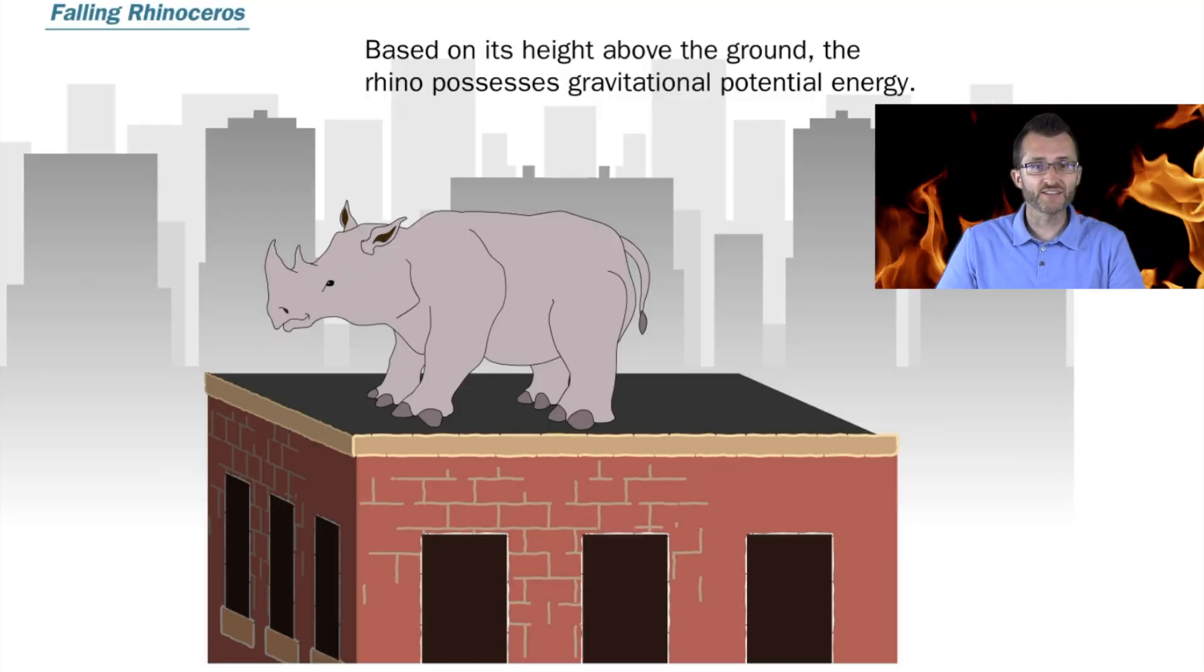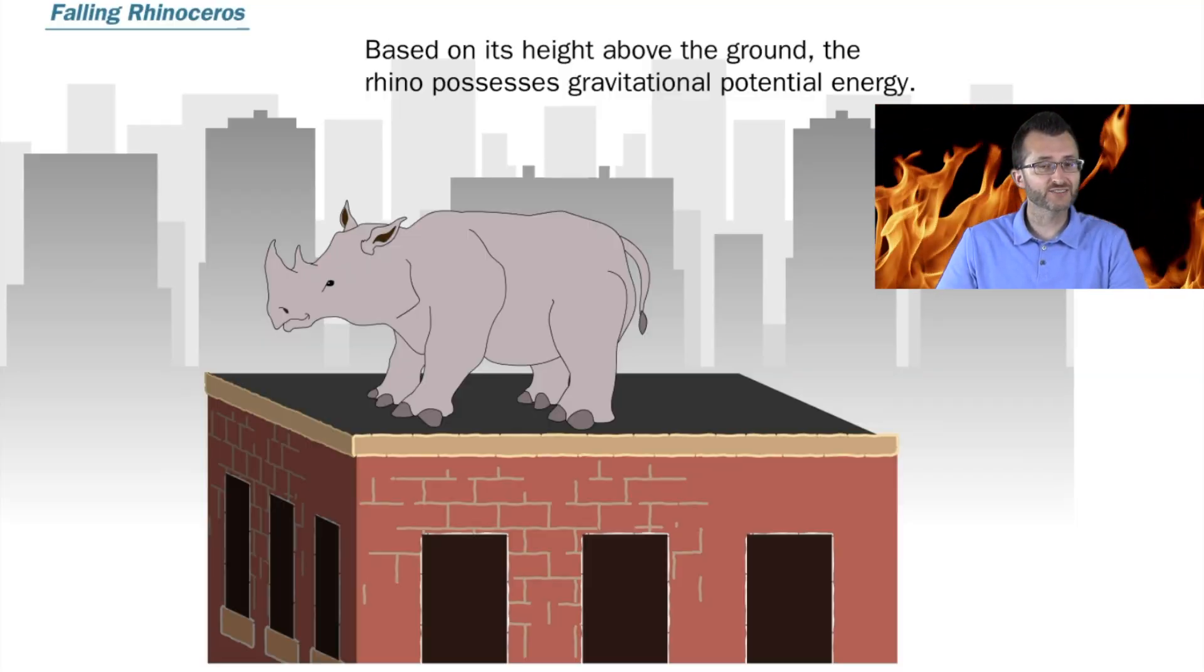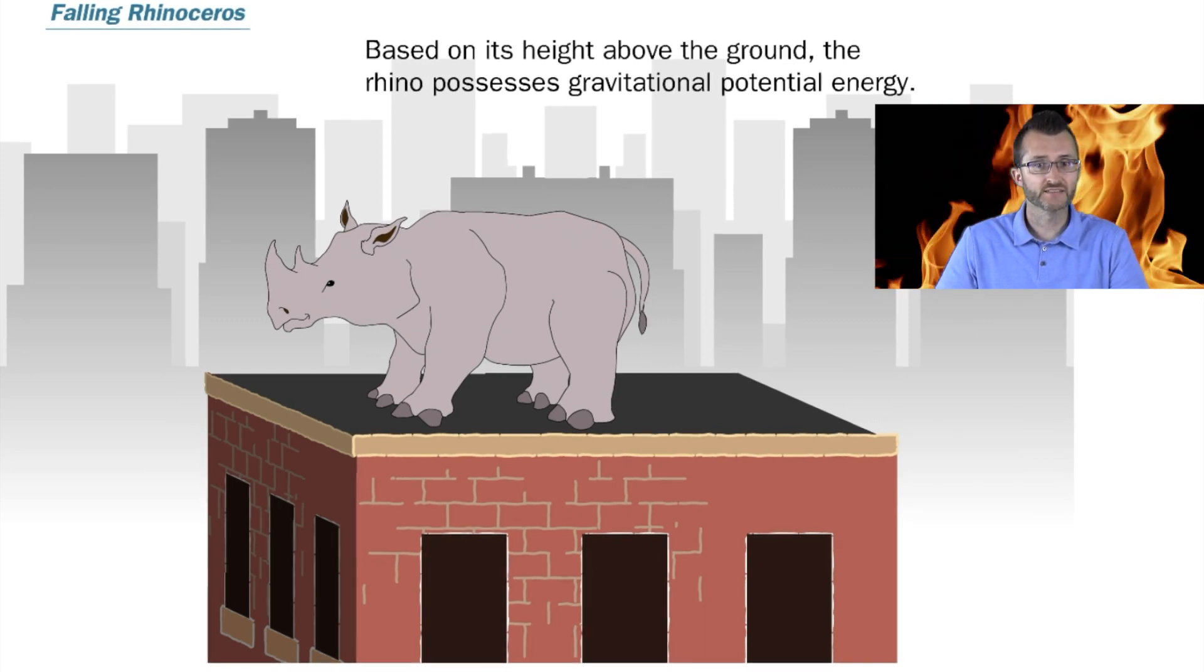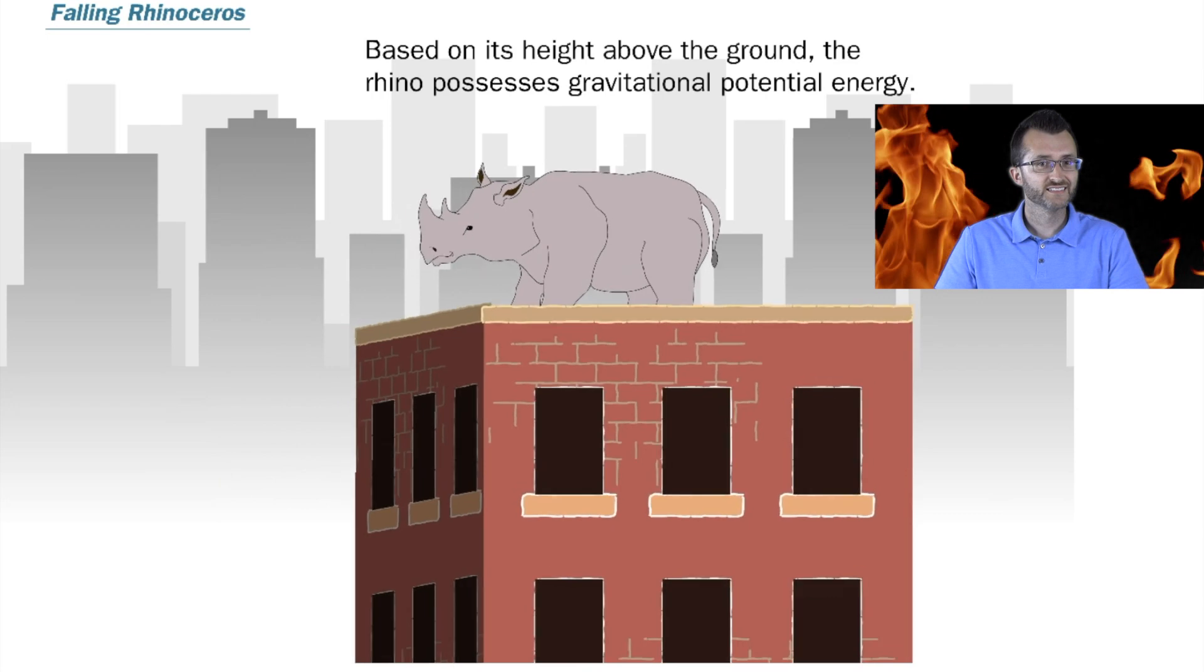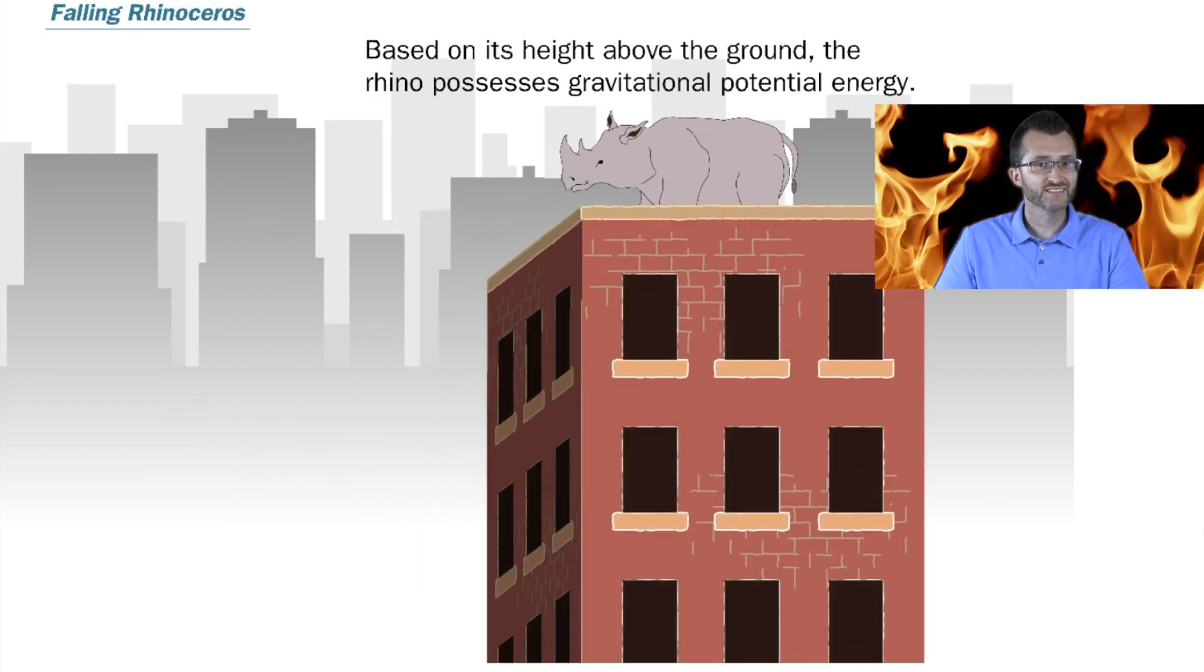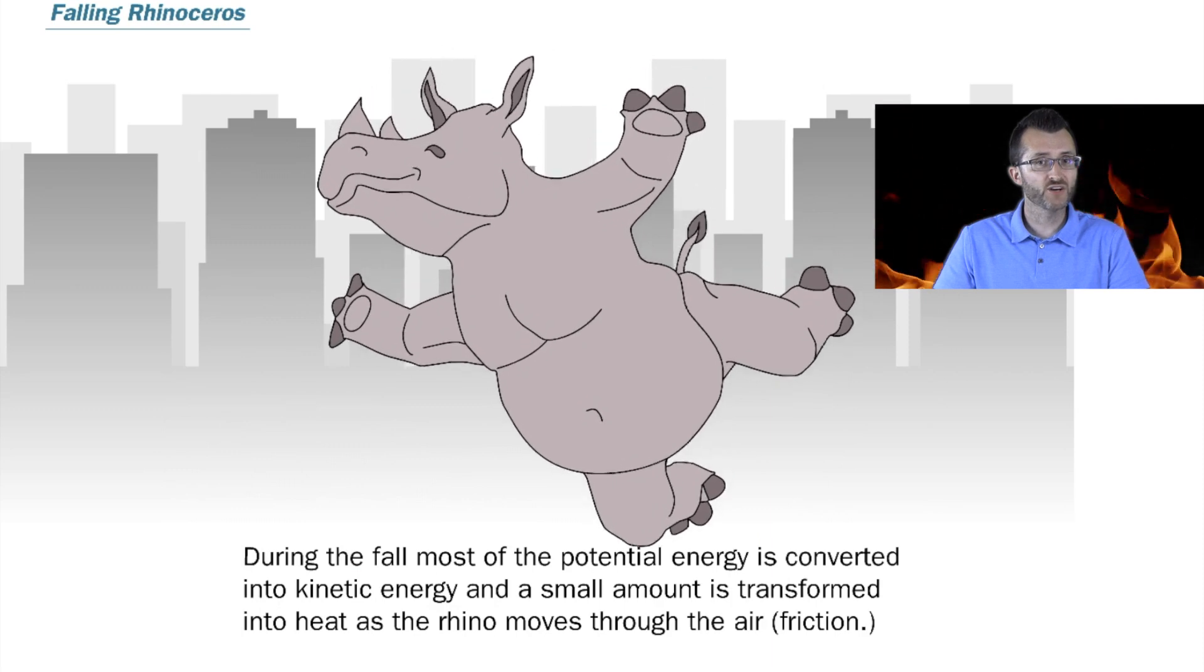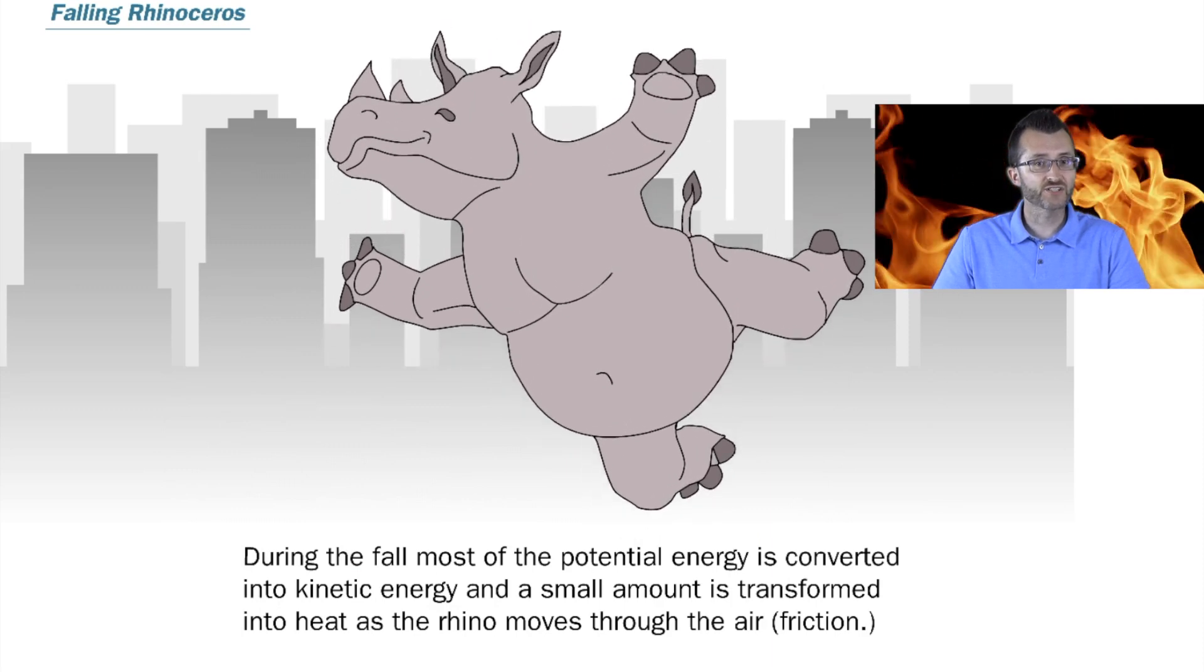We're going to check out the falling rhinoceros. Right now, the rhinoceros is at the top of a tall skyscraper with a very high potential energy. Get ready. He's going to jump. As he jumps, his high potential energy is going down as kinetic energy is going up.